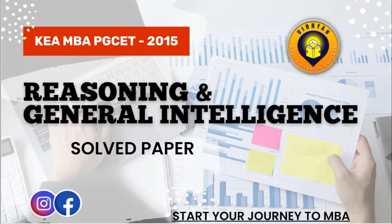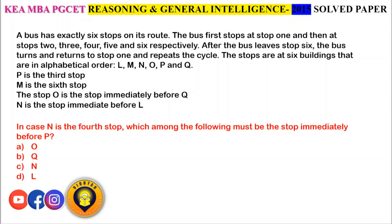So let us start now. A bus has exactly 6 stops on its route. The bus first stops at stop 1 and then stops 2, 3, 4, 5 and 6 respectively. After the bus leaves stop 6, it turns and returns to stop 1 and repeats the cycle. The stops are at 6 buildings in alphabetical order: L, M, N, O, P and Q.